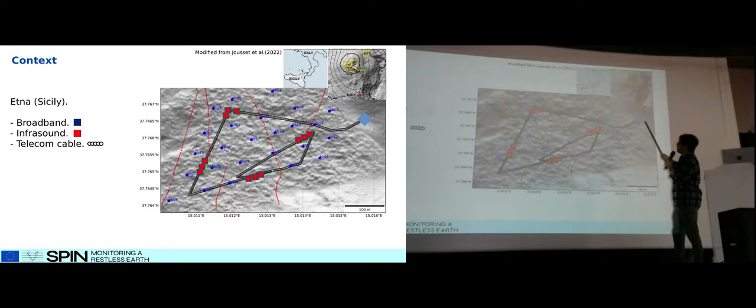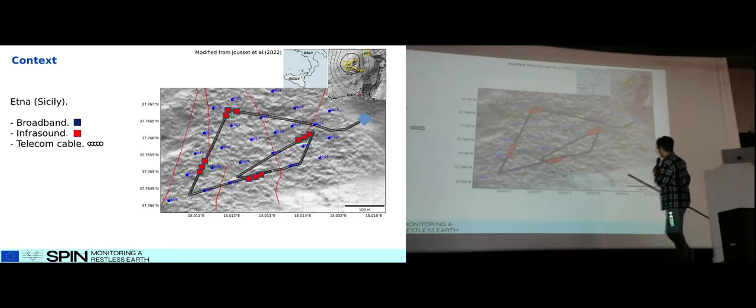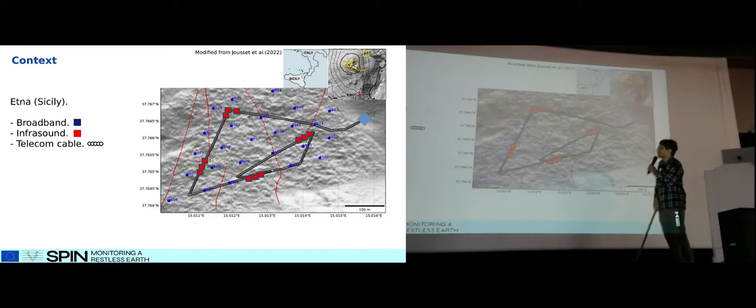From the observatory we have a telecom cable which is deployed in a near flat surface. You can see here that this scale is of 10 meters. Besides that, we have deployed broadband seismometers around in an array, and we have infrasound stations across certain parts of the telecom cable. These are some fractures that are in the area.